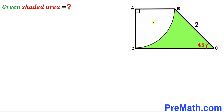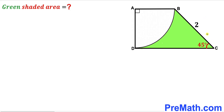Welcome to pre-math. In this video we have a quarter circle with center A fully inscribed in a trapezoid ABCD, such that the side length BC is 2 units and the angle BCD is 45 degrees. Our task is to calculate the area of the green shaded region.